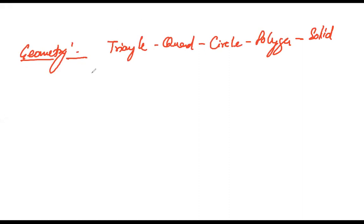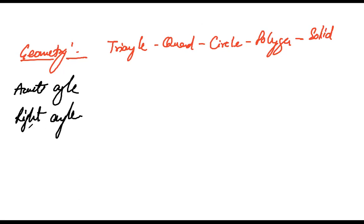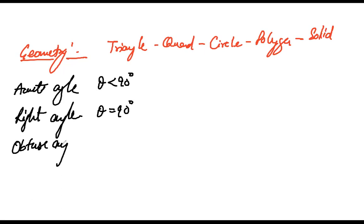Starting with a few very basic terms first. We often come across terms such as acute angle, right angle, and obtuse angle. I'm going through them a bit faster since these are very basic. An acute angle is any angle less than 90 degrees. A right angle is when the angle is equal to 90 degrees. An obtuse angle is when the angle is greater than 90 degrees and less than 180 degrees.